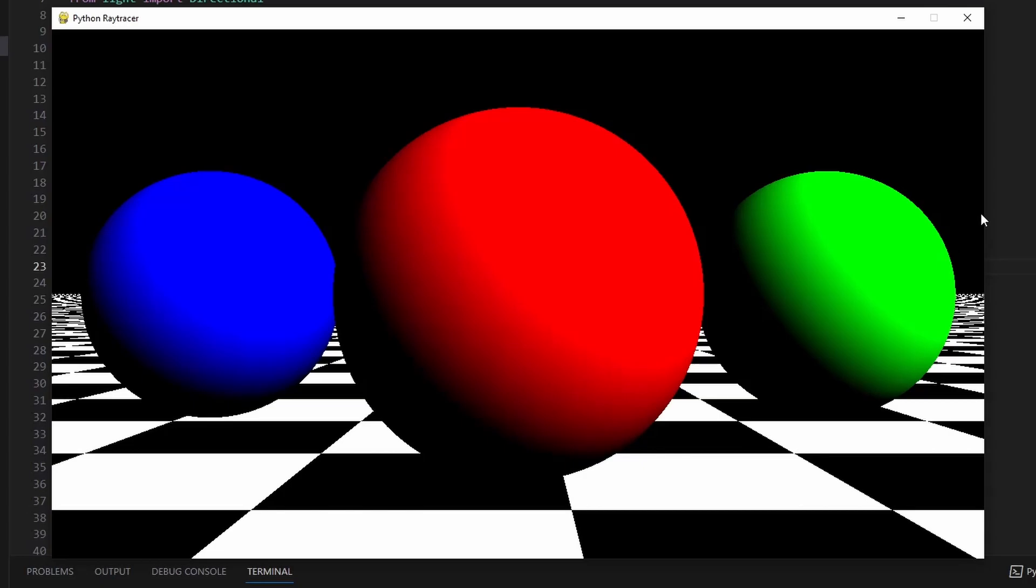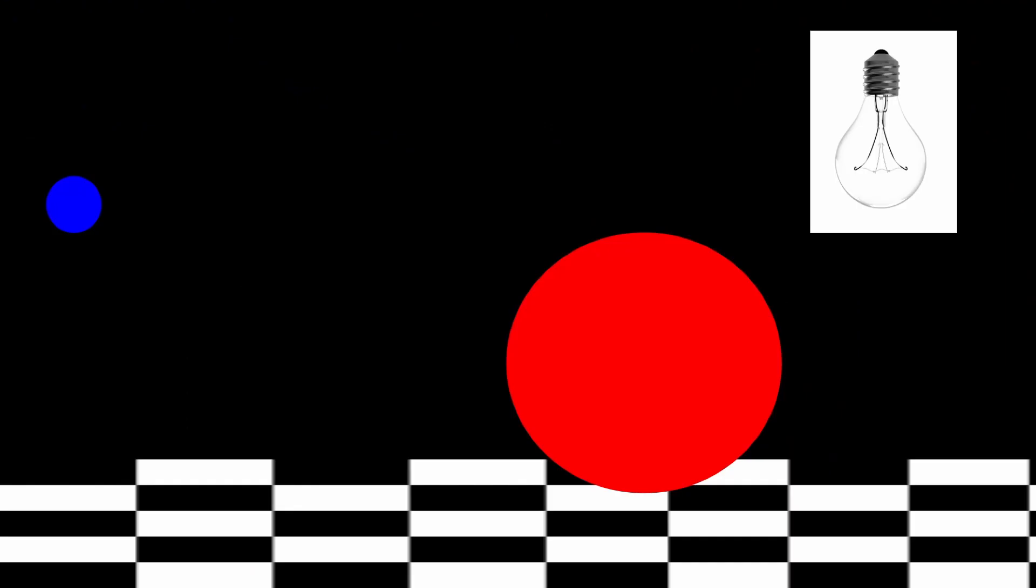Do you see what's wrong with this image? Here, I'll zoom in. There's no shadows on the ground. This can easily be fixed by casting a ray from the place that it was hit to the light source. If there's an object in the way, make a shadow.